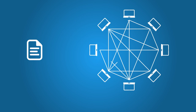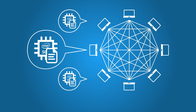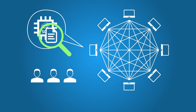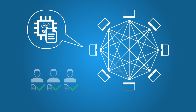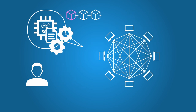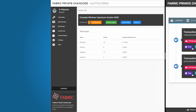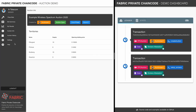To begin the auction, the auctioneer deploys the auction chaincode on the network. Participants can then verify that the correct chaincode has been deployed and has not been tampered with. Once the chaincode is up and running, the auctioneer sets up the auction details, including the available spectrum licenses and the participants.